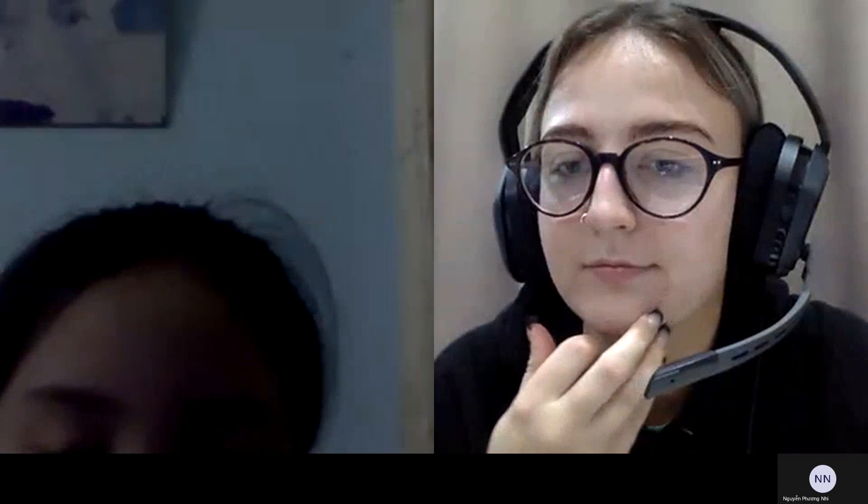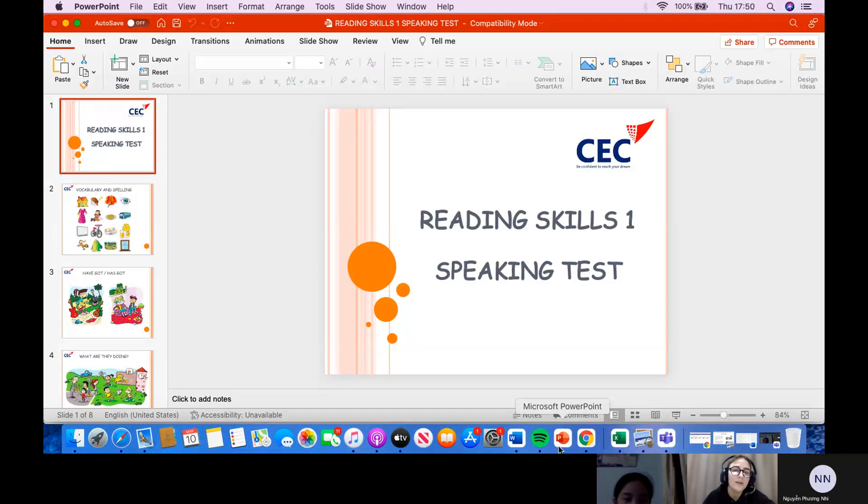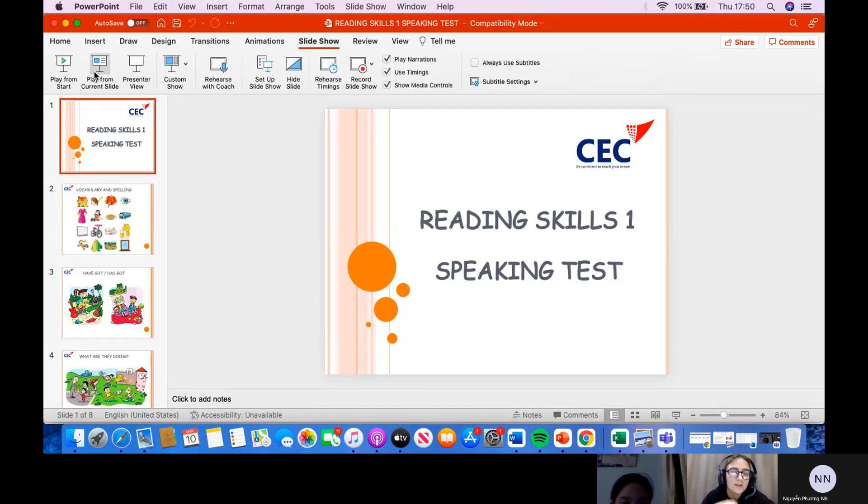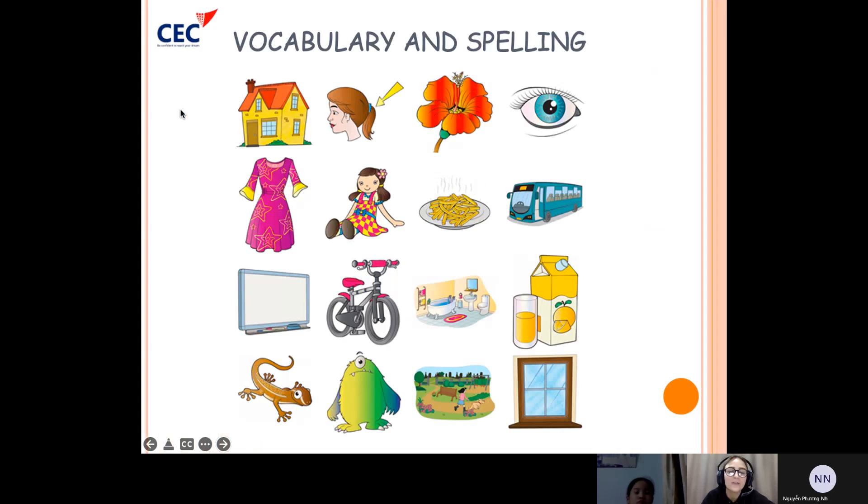Give me one second. Okay, Bamoan, let's look at my screen. So our speaking test. Okay, so this is our first part of the speaking test. What is this? That is our eyes. Yeah, their eyes. Good. What is this?